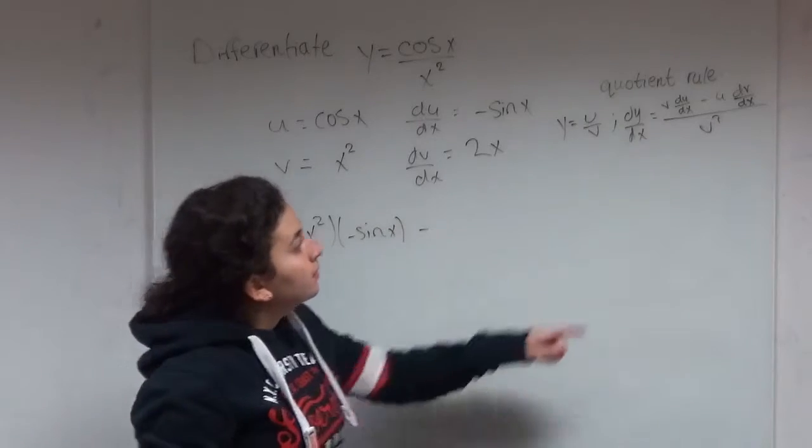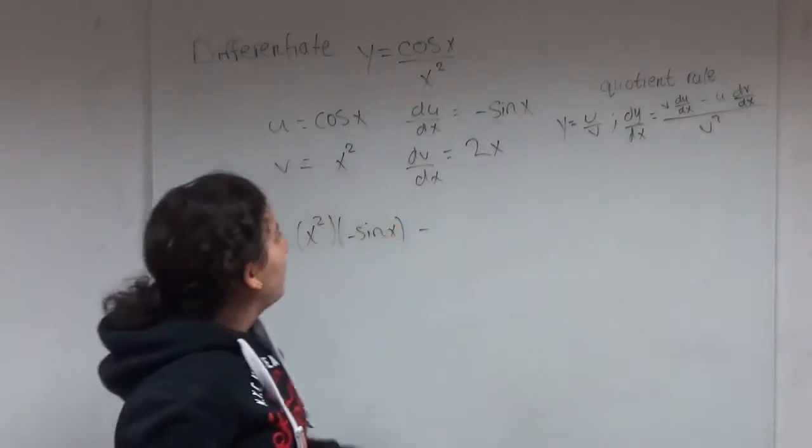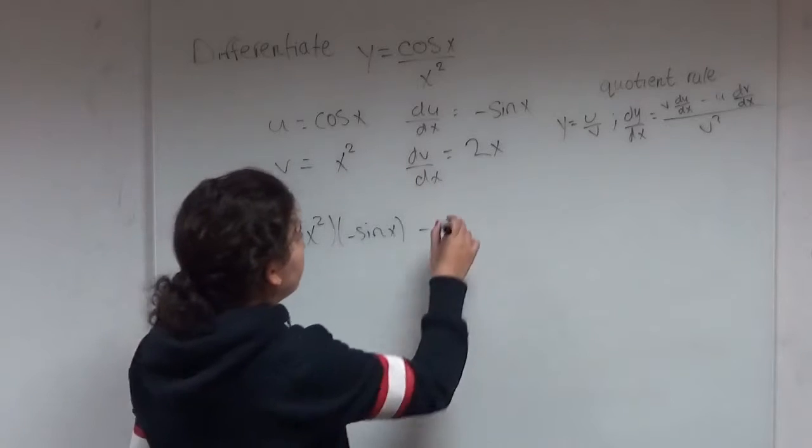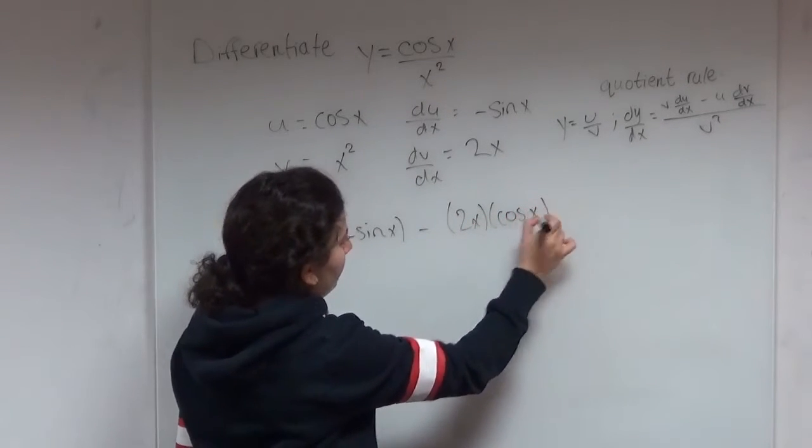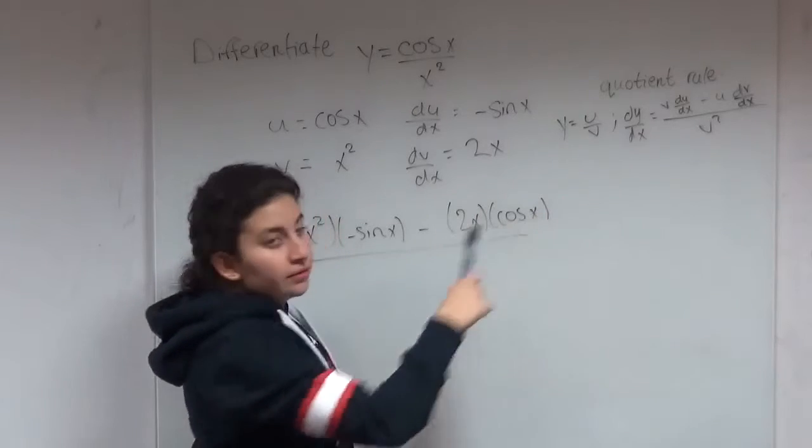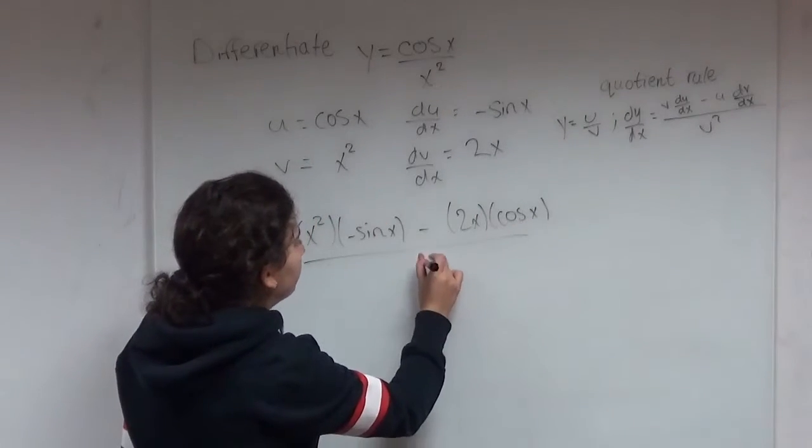And then minus u times dv over dx. So cos x times 2x. And now all divided by v squared, so x squared squared.